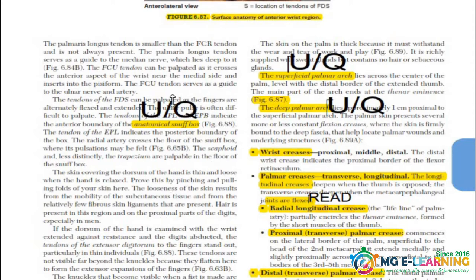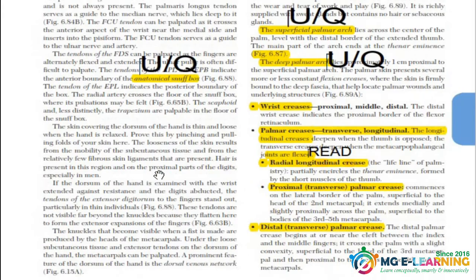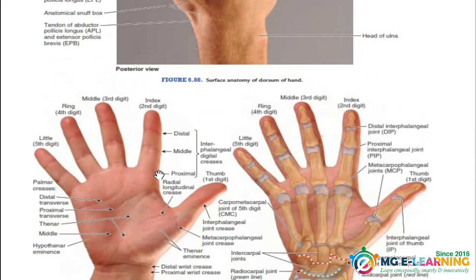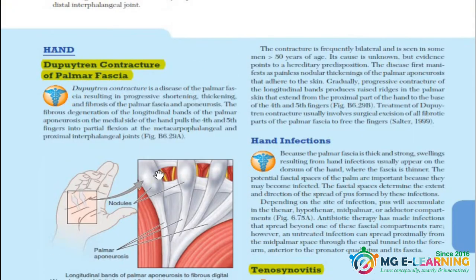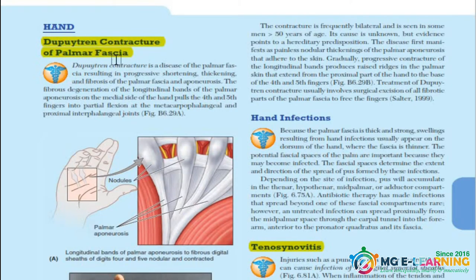It's not written in the book, but the basis is that drug addicts used to sniff from that area — from the snuffbox — and that's why it is called the snuffbox. Then we move on to clinicals, where you should know about Dupuytren's palmar fascia contracture, which is important, and hand infections, which are not that important.